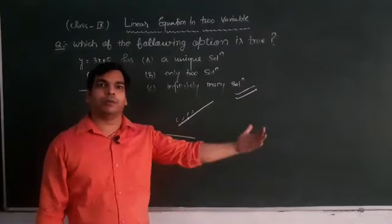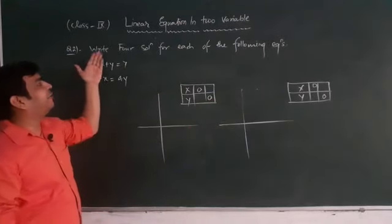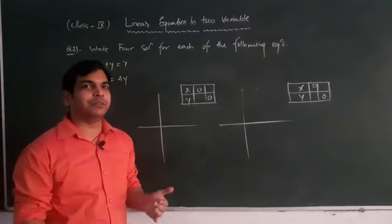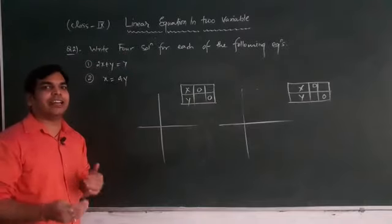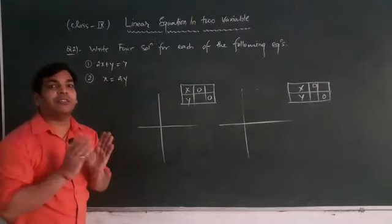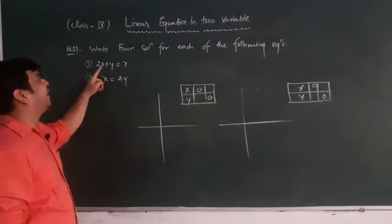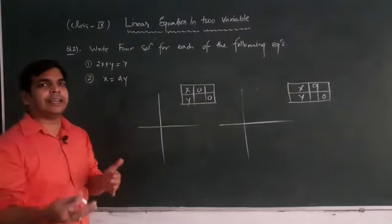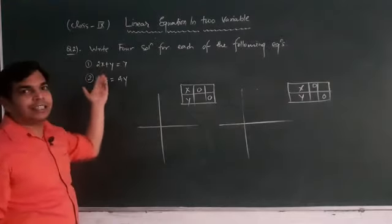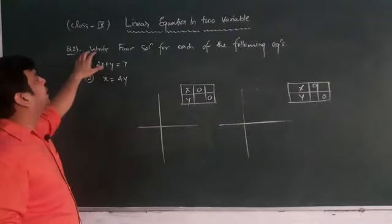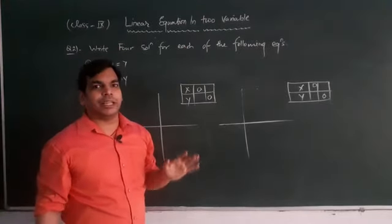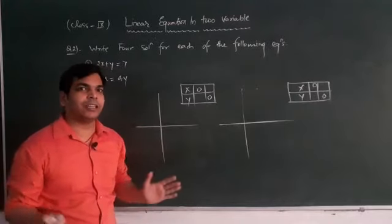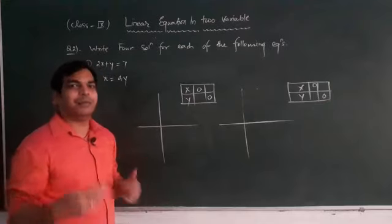Now we are moving towards the next problem. This is the problem: write four solutions for each of the following equations. Four solutions means we have to let the value of x four times, and after that we have to calculate the value of corresponding y. Similarly, we can take negative values also. In this question we have to find out four solutions for each equation. I am telling you how to find out two solutions, the rest two solutions you will find out by yourself, because you also have to practice to learn properly.